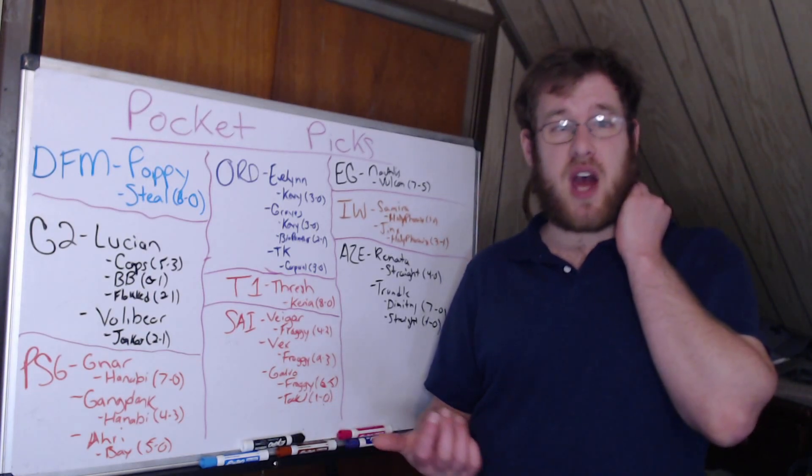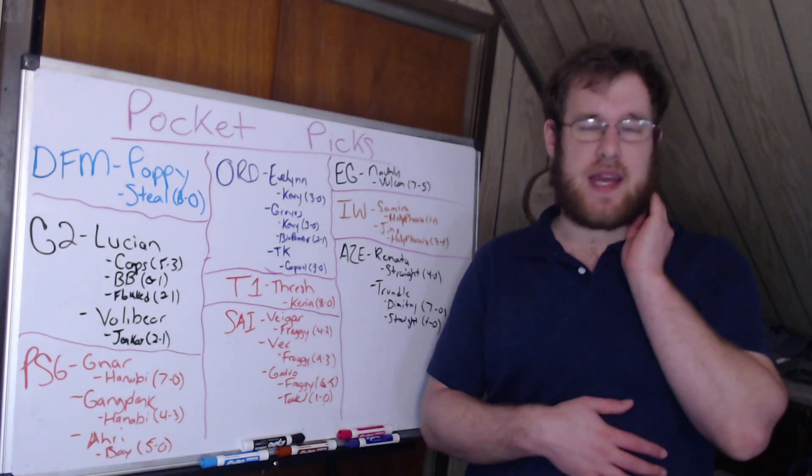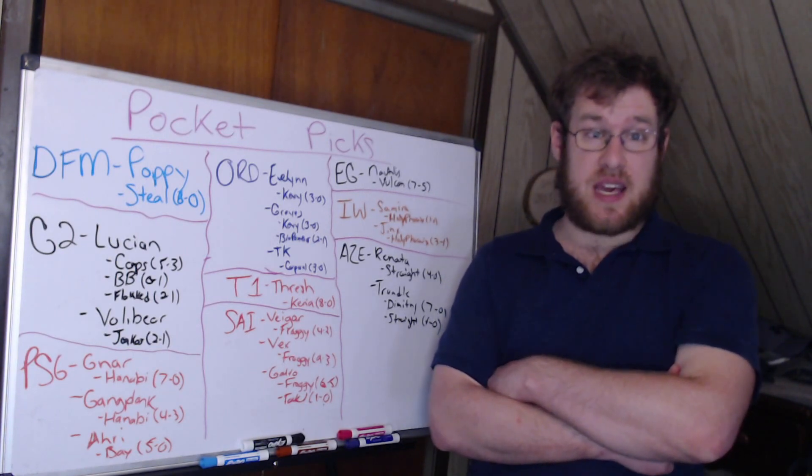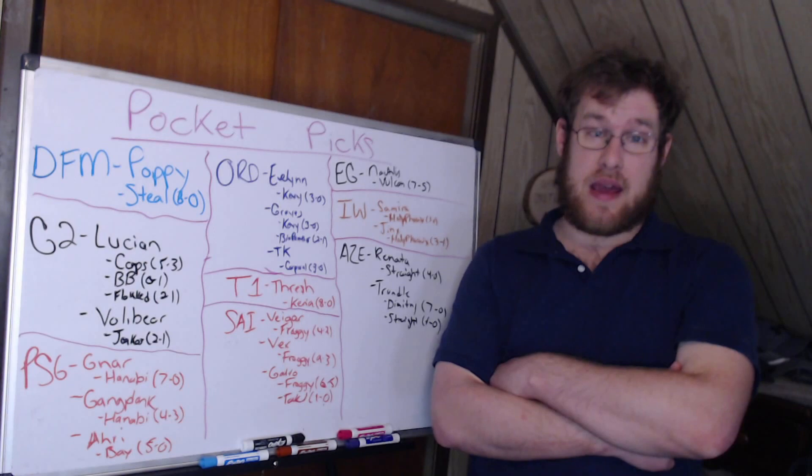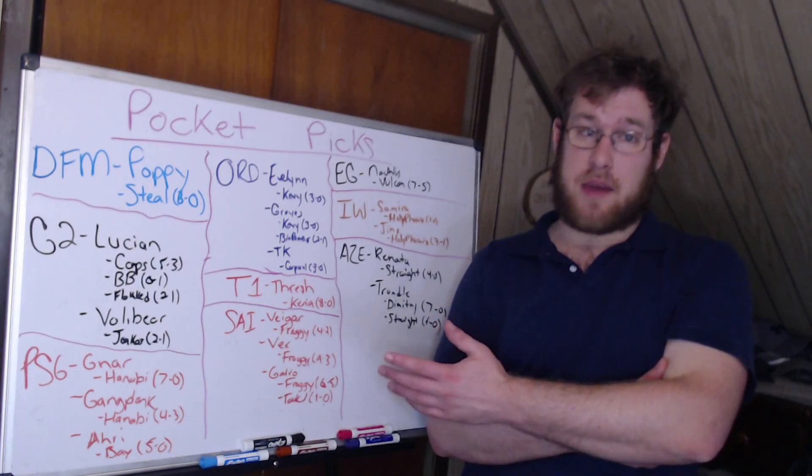And then Galio, because they flexed it to support. Froggy was only 6-5 on the champion. Taki was 1-0 in bot lane on it, but Galio was getting banned too. So evidently Froggy is—I mean, at least based on this alone—like I say all the time, I didn't watch these smaller regions play, but evidently Froggy is the player that draws the bans.